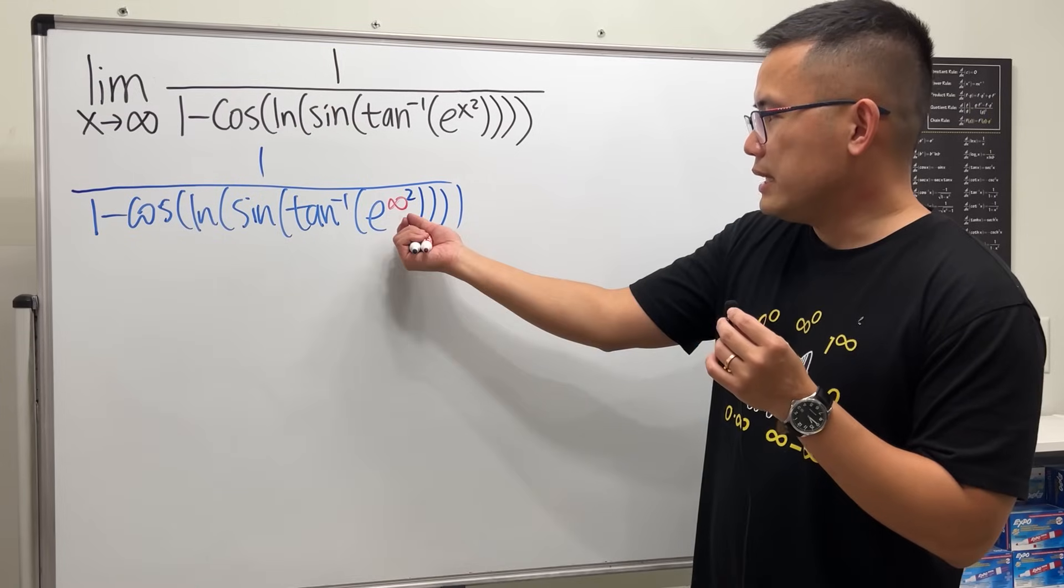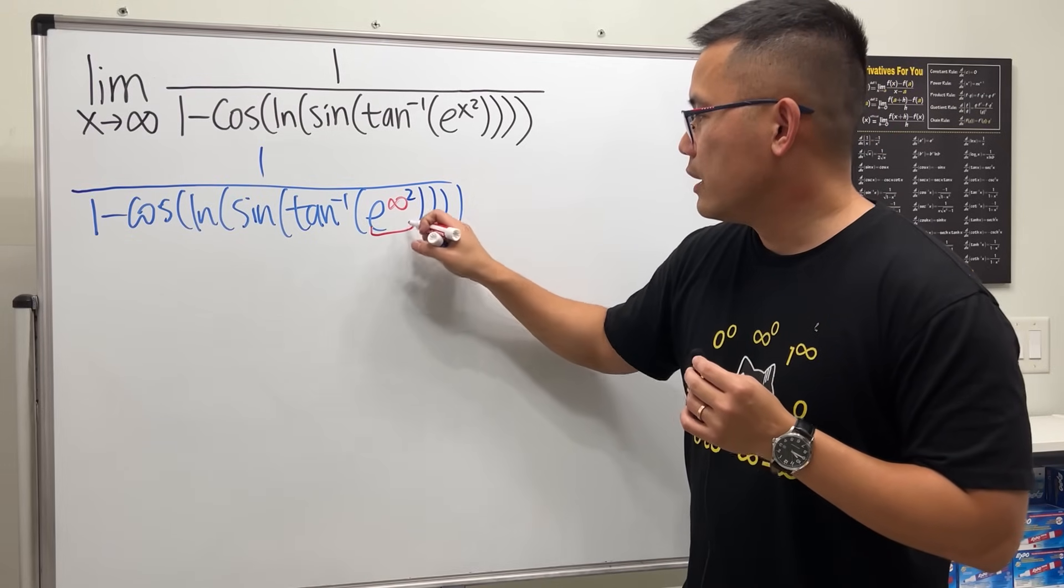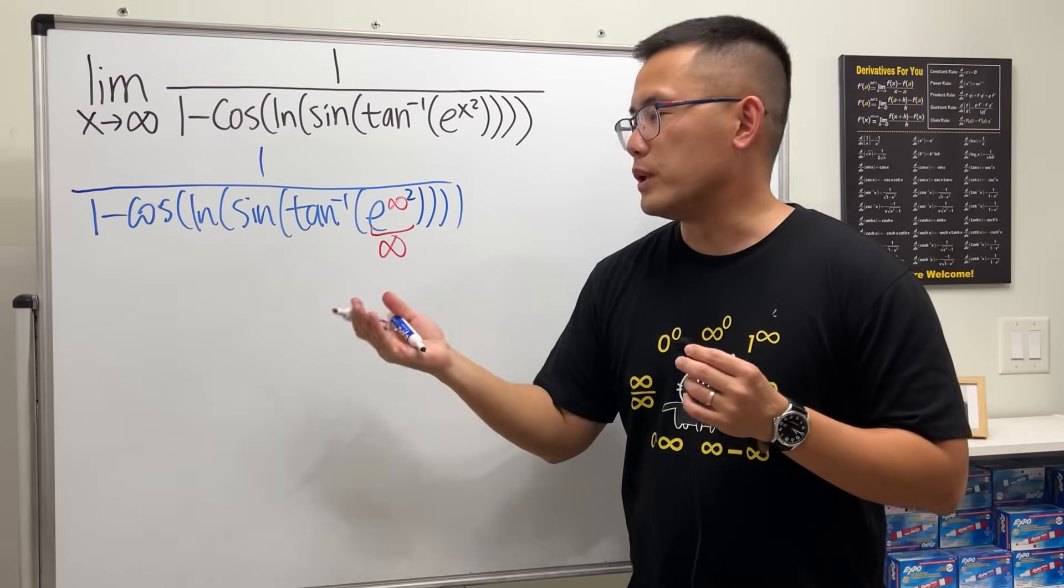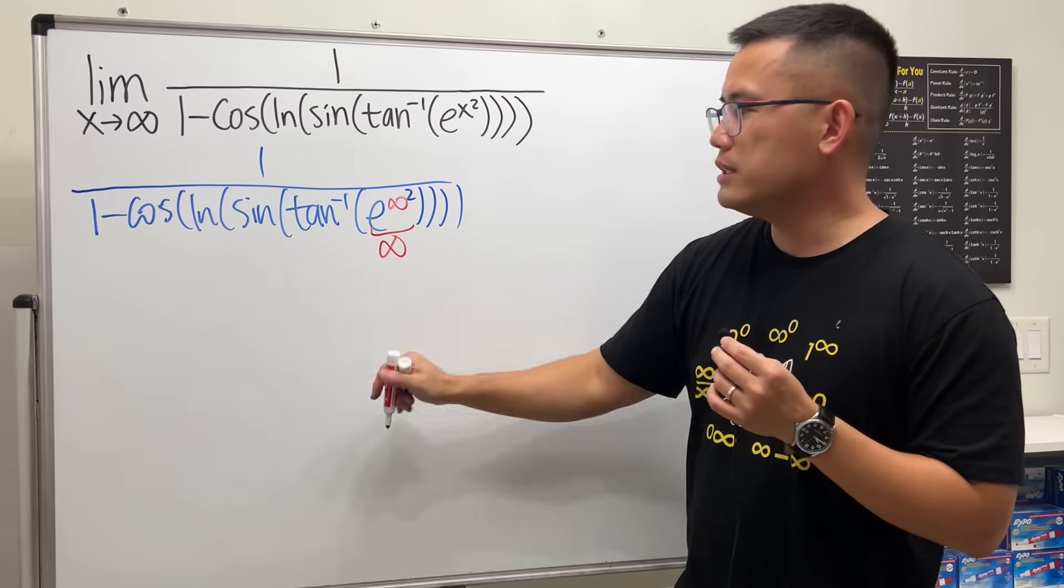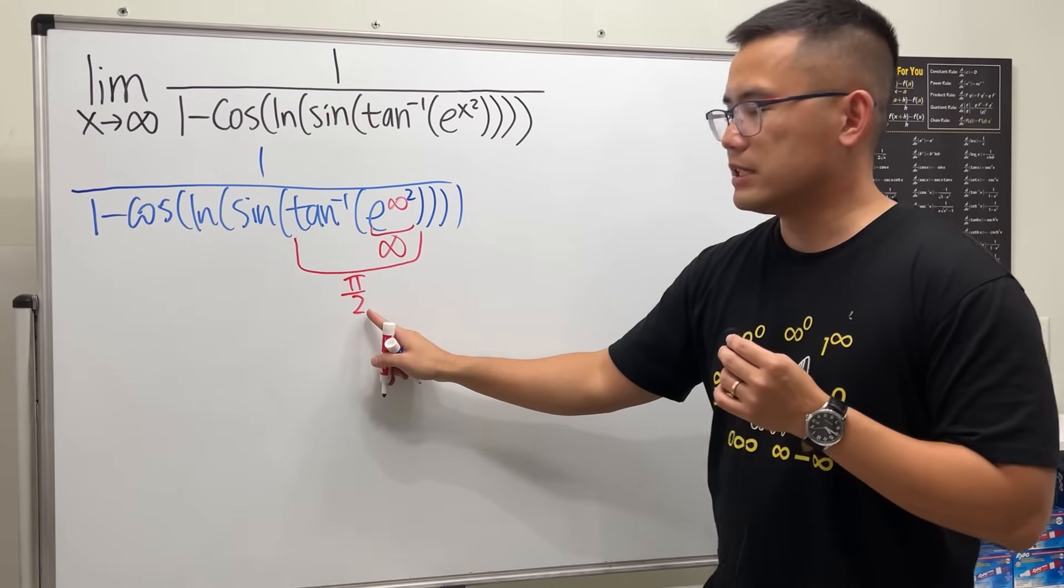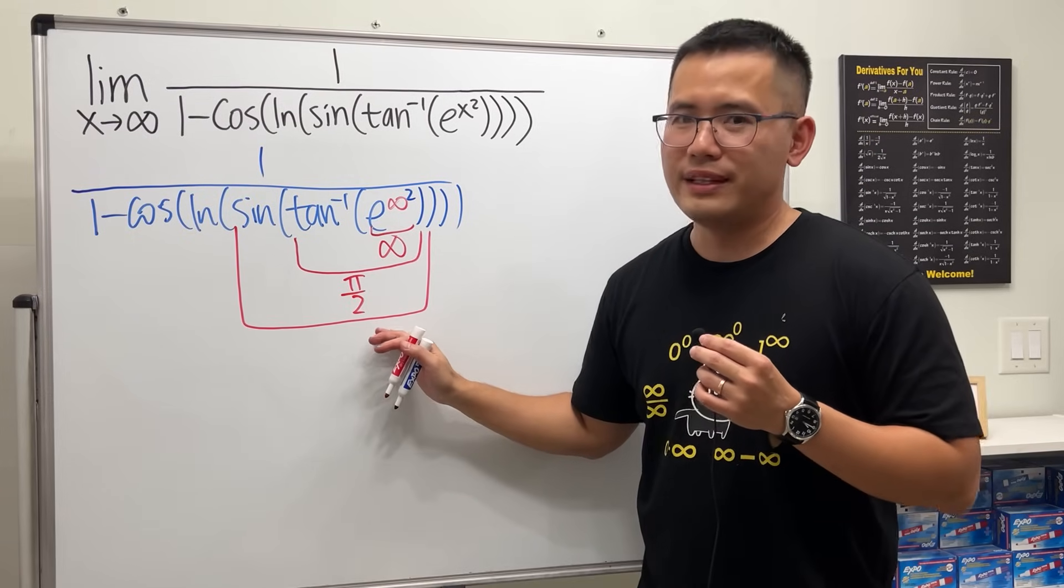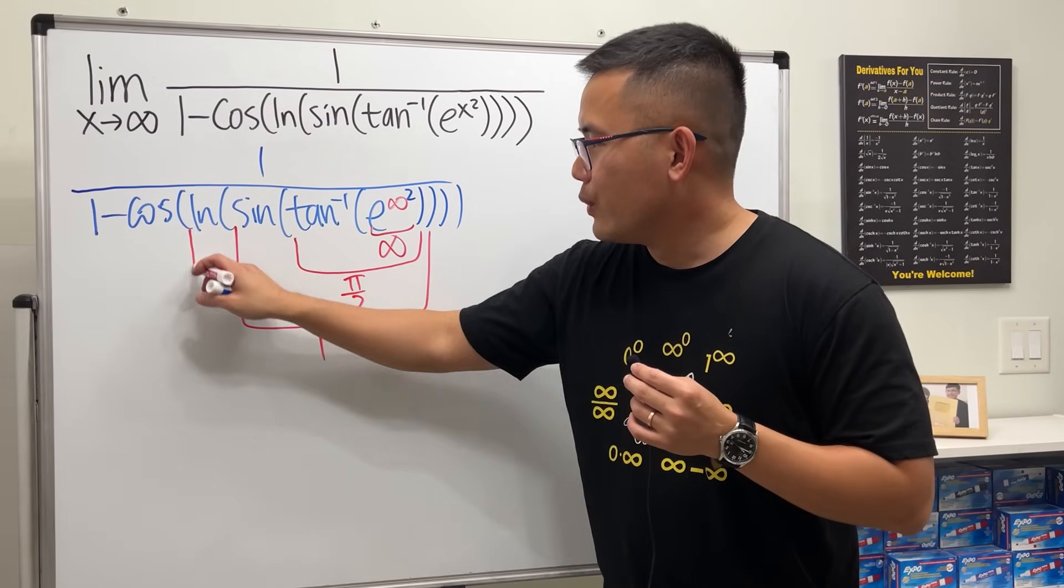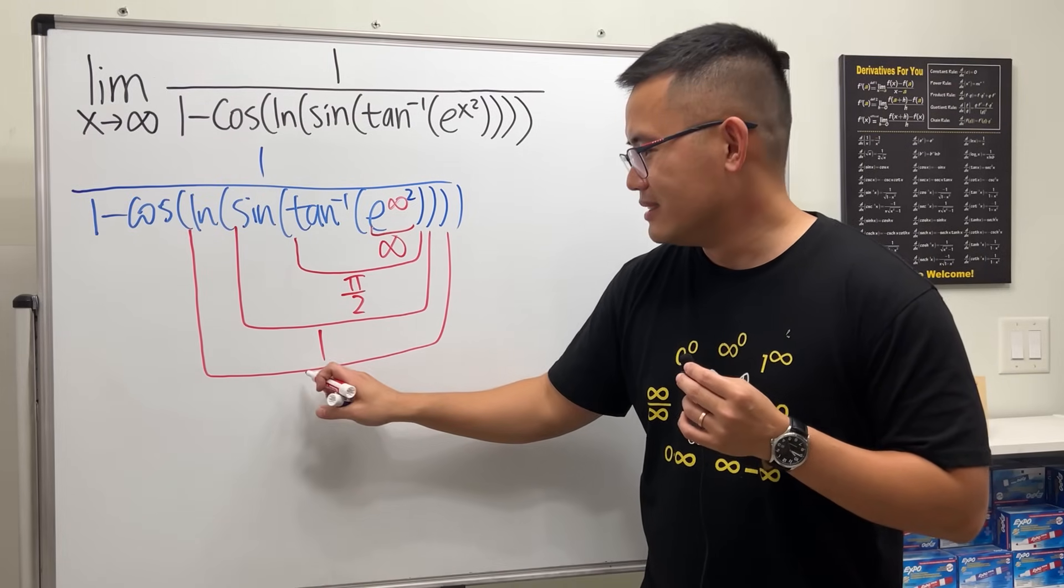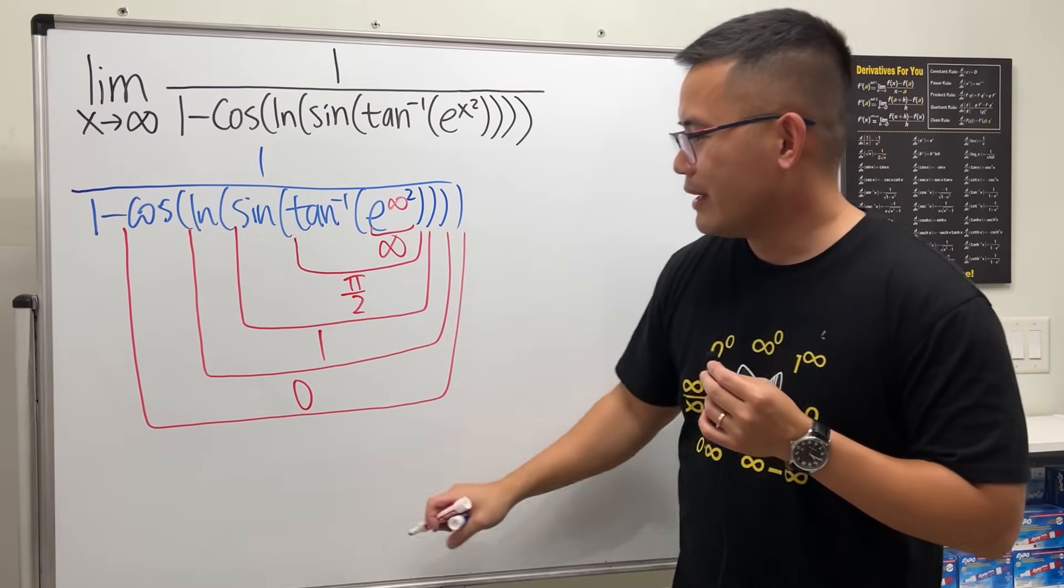Now let's try to reason each and every step out, doing this inside out. Infinity squared is still infinity. e to the infinity's power is infinity. If we have inverse tangent of infinity, that means we're looking at the horizontal asymptote for inverse tangent, which is at π/2. Then we look at sine of π/2, which is very nicely equal to 1. Then ln of 1 is 0.